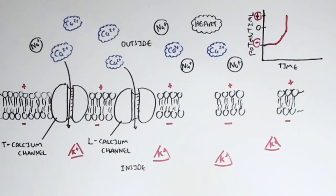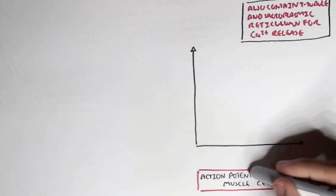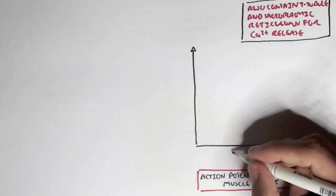So I hope you understand how the membrane potential changes within the heart cells. Now we can go back into our main diagram and look at the action potential of a cardiac muscle cell and the changes in the membrane potential.